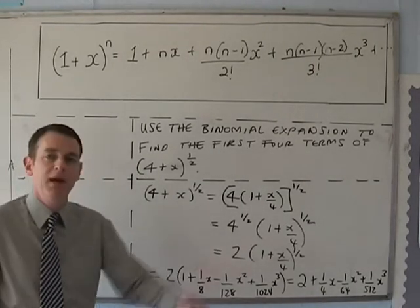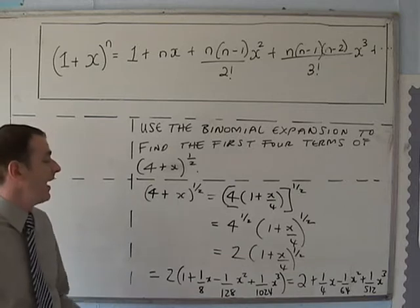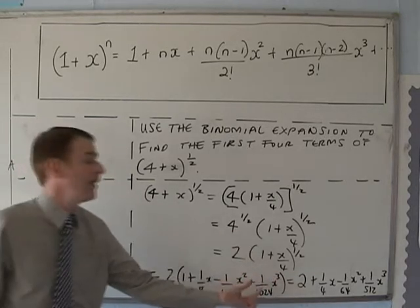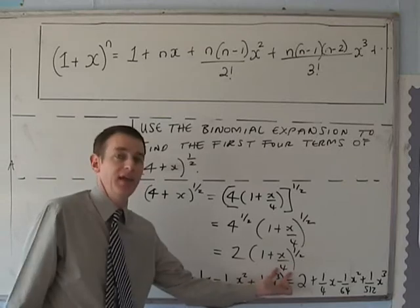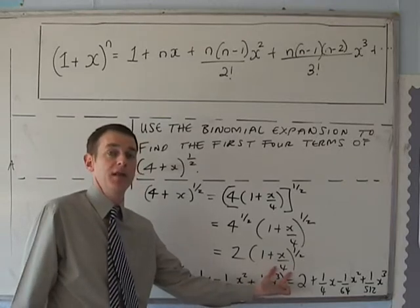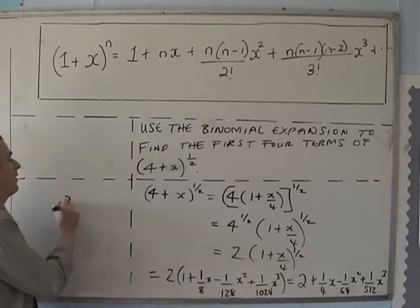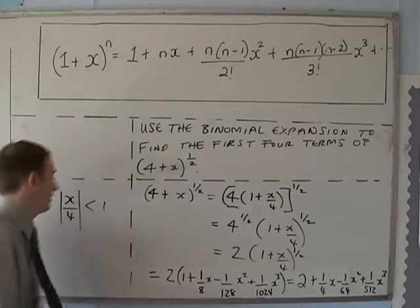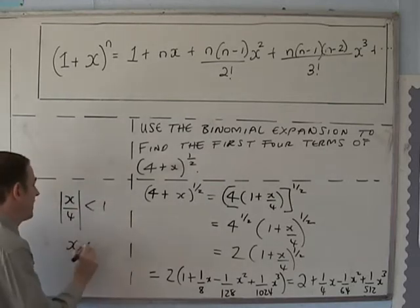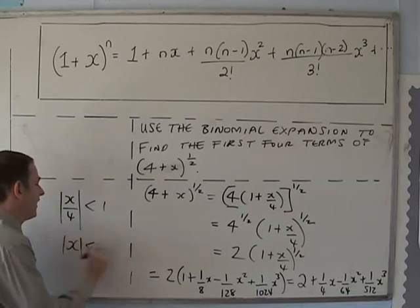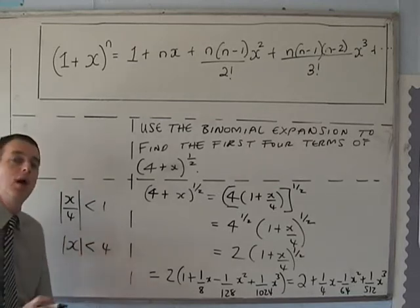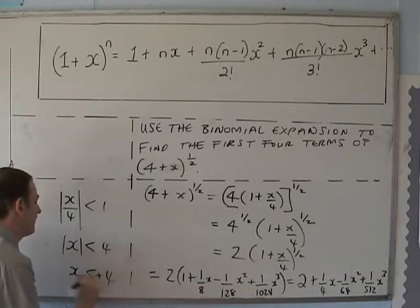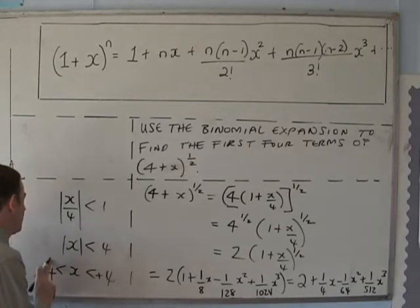What is this expansion going to be valid for? It doesn't really matter about the 2 at the front — it's going to be valid when the modulus of x/4 is smaller than 1. That's exactly the same as saying the modulus of x is smaller than 4, which means x is smaller than +4 and bigger than −4.